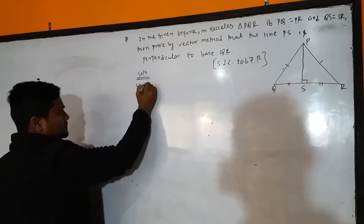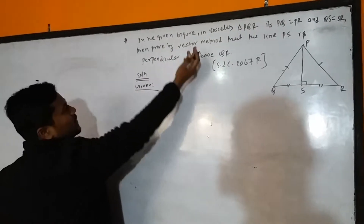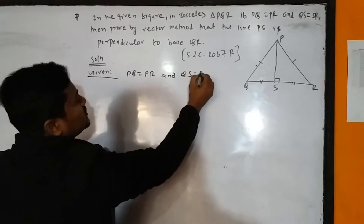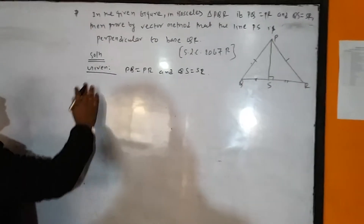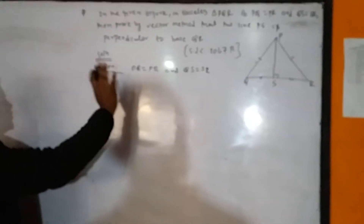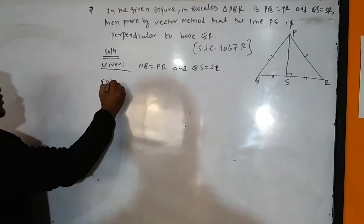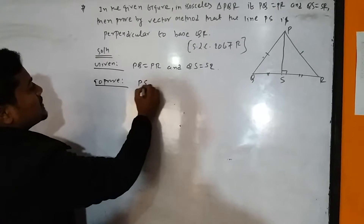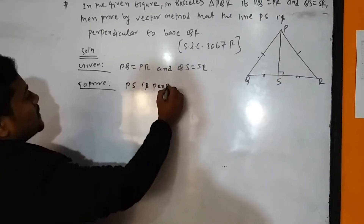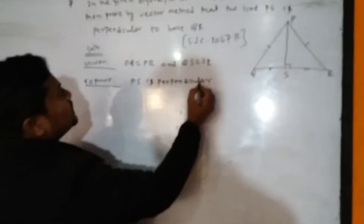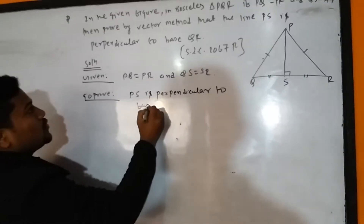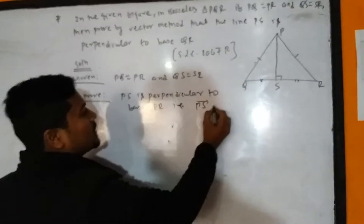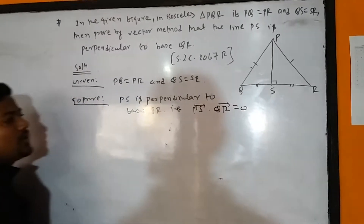First of all, the given conditions: PQ is equal to PR, QS is equal to SR, and PQR is an isosceles triangle. To prove: PS is perpendicular to base QR — that is, we have to prove that PS vector dot QR vector is equal to 0.